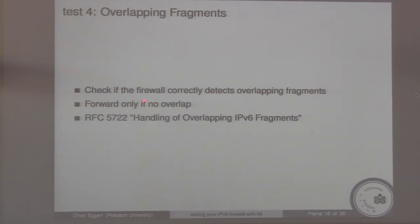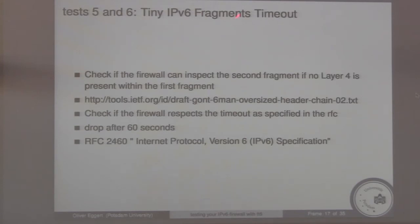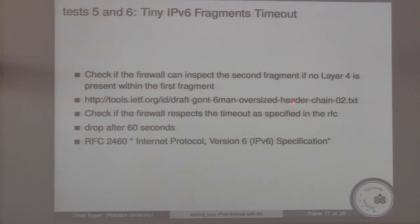Test four is overlapping fragments — we check if the firewall correctly detects overlapping fragments and only forwards packets with no overlap. Tests five and six are tiny IPv6 fragments and tiny IPv6 fragments timeout. A tiny IPv6 fragment is a packet in which the upper layer header — TCP or UDP — is not present in the first fragment, so the firewall can't decide whether to forward or drop it without waiting for the second fragment. There's also an RFC-specified timeout: drop fragments after 60 seconds if reassembly fails.